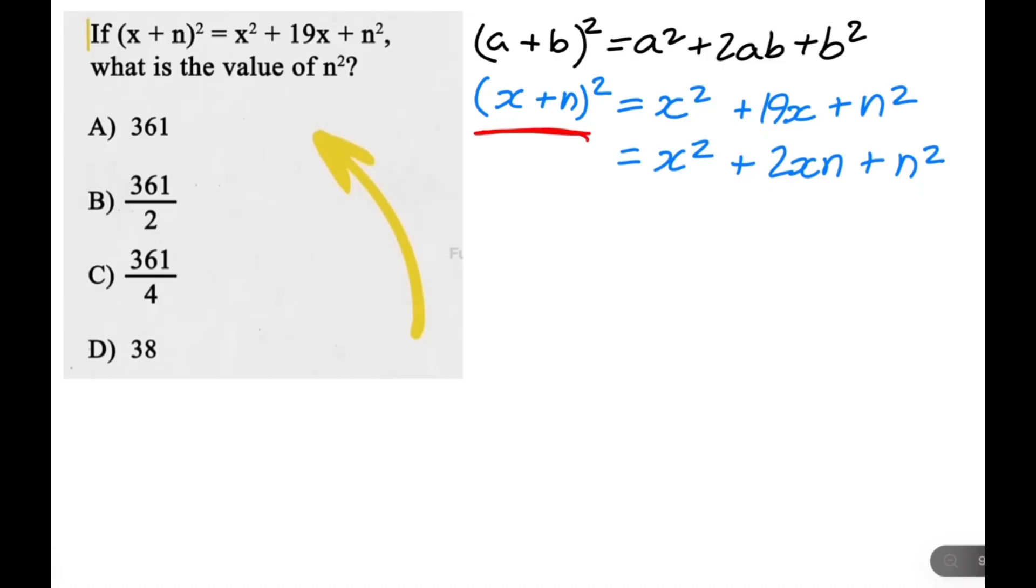And now that we know that these two equations are equal to x plus n squared, we can just say that they're equal to each other. So let's write x squared plus 19x plus n squared is equal to x squared plus 2xn plus n squared.